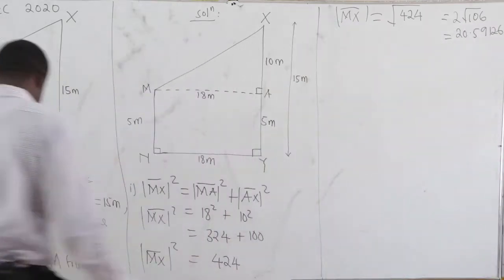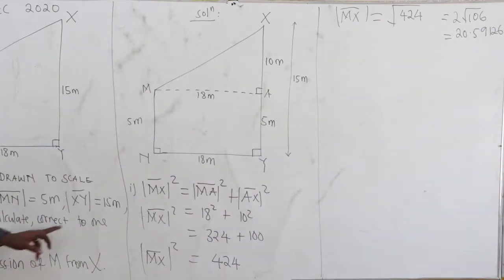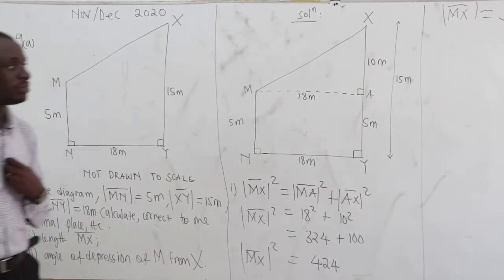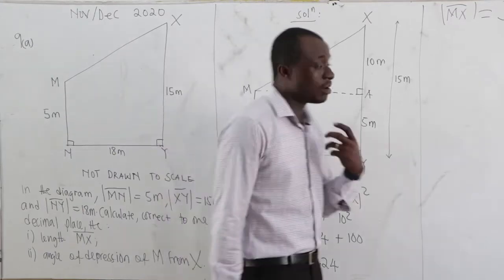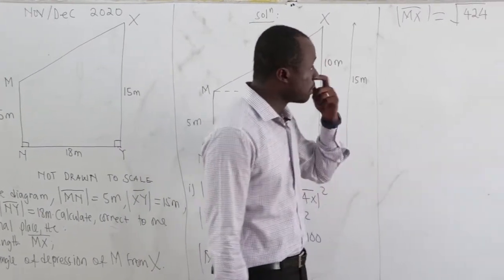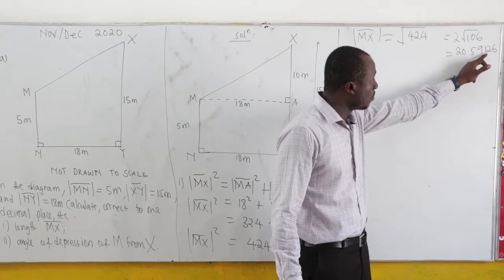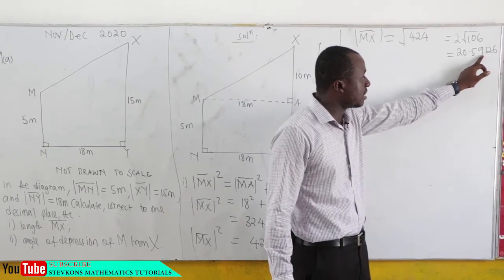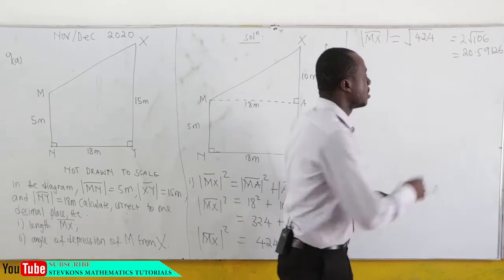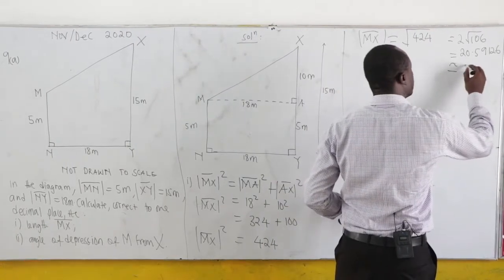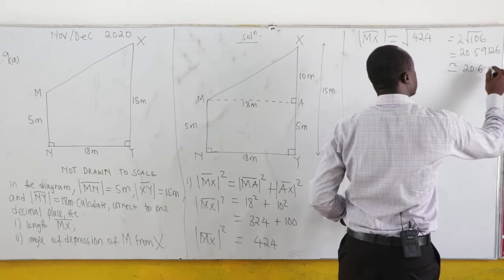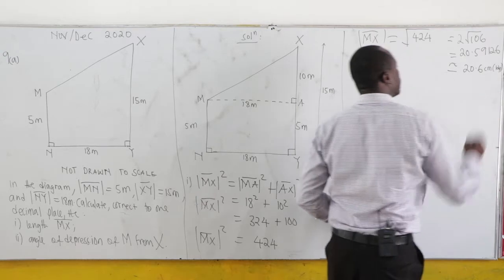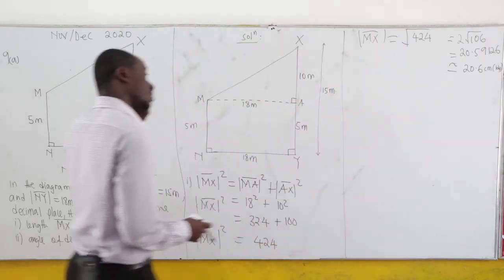But the question says calculate correct to 1 decimal place. We have 20.59126. Correct to 1 decimal place — the digit following is 9, which is 5 and above, so that rounds up. This gives us 20.6 meters. That is the answer for the first part.